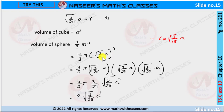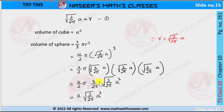Expanding the cube: we get a³ from the 'a' term, and multiplying √(3/2π) · √(3/2π) · √(3/2π) gives 3/2π · √(3/2π). After cancelling 3 with 3 and 2 with 2 and π with π, the remaining expression becomes 2·√(3/2π)·a³ — that is, 2·√(3/2π)·a³.